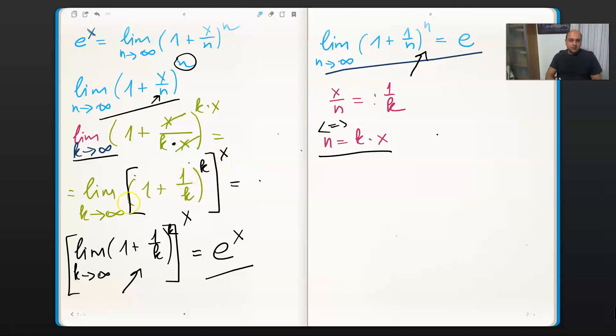Now you see this limit is only dependent on k and not dependent on x. So x is a kind of constant value, so we can take it outside of the limit. And this limit is e, and now it's e to the power of x. So that simple is the idea.